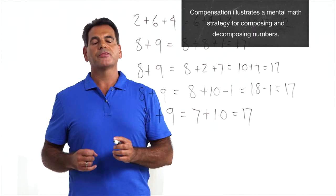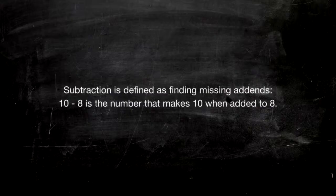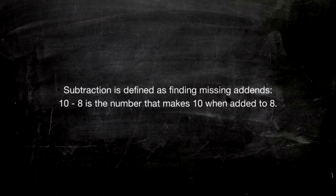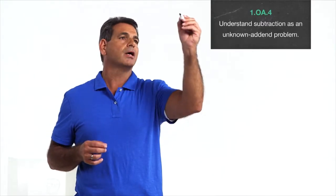Subtraction is traditionally thought to be harder than addition, but when students understand the unique relationship between addition and subtraction, subtraction within twenty becomes quite easy. Subtraction is defined as finding a missing addend. Ten minus eight is the number that makes ten when added to eight. Let's look at two ways students can subtract seventeen minus nine.